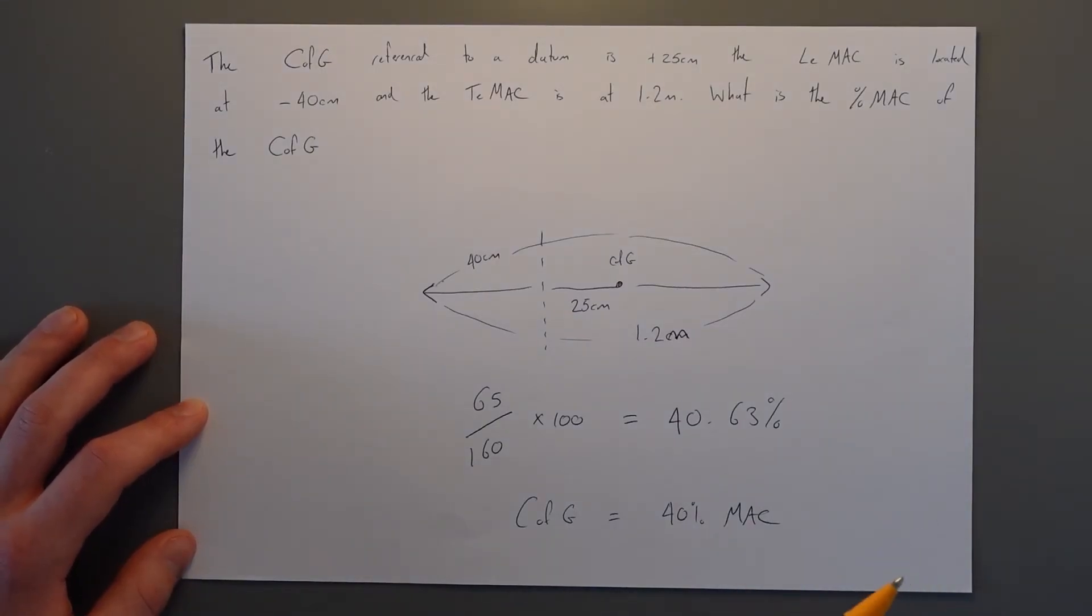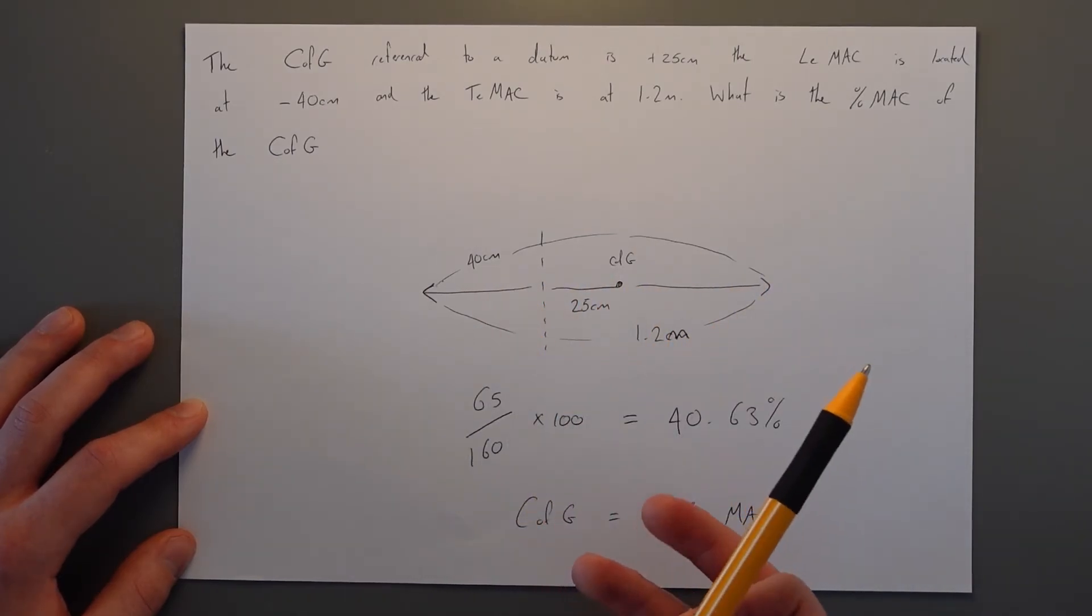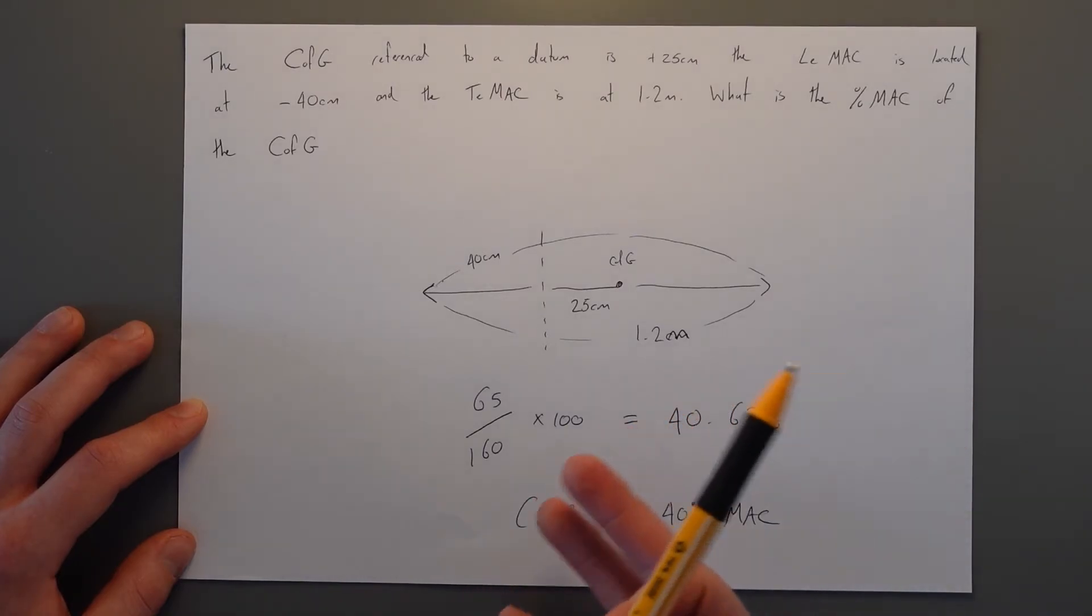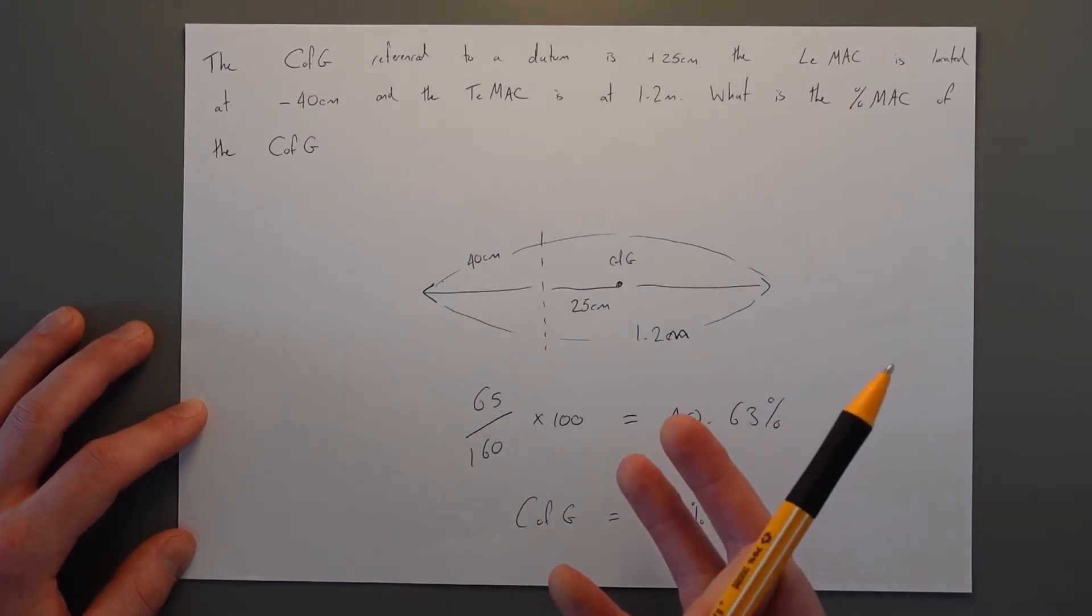When flying and using load sheets in mass and balance practice exams for example, you will see that there is a range for the centre of gravity described in terms of this percentage MAC. If you're outside of this range, then we have to adjust the centre of gravity position back inside this range before we take off. Or we could end up with an uncontrollable aircraft leading to disaster.